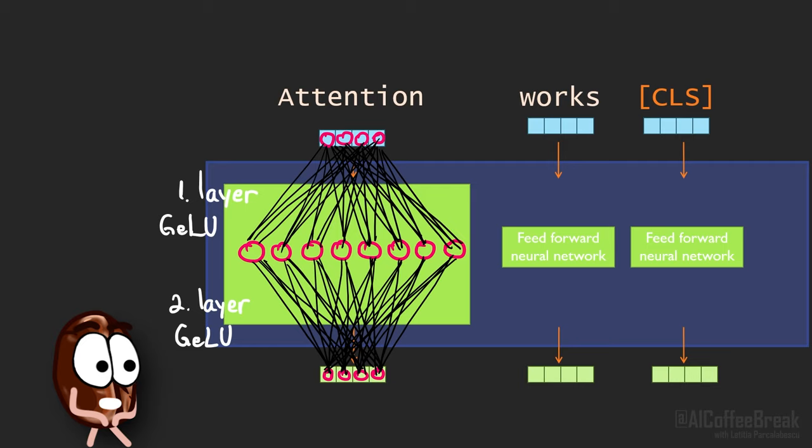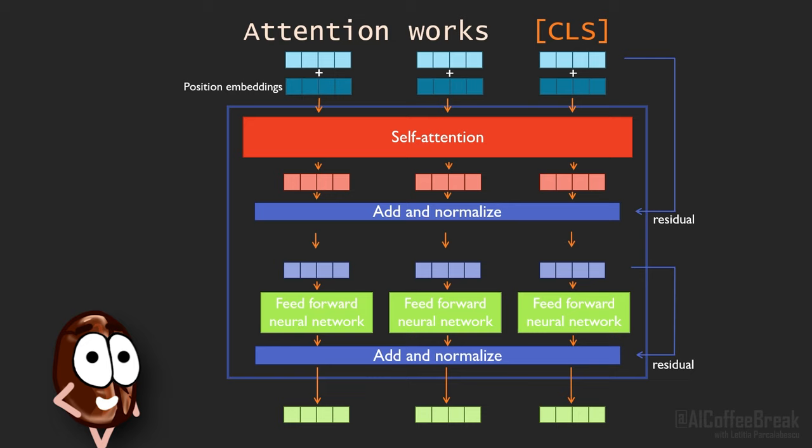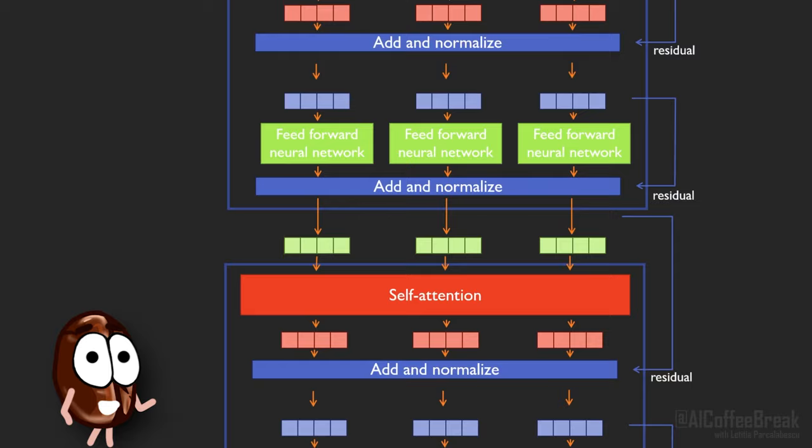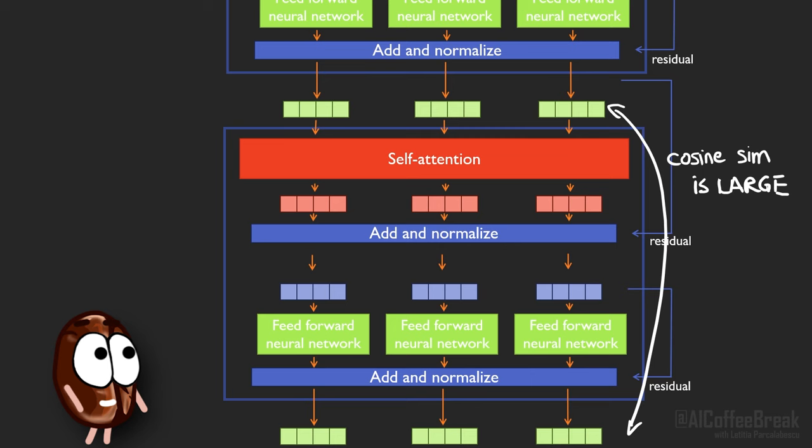Furthermore, the authors empirically observe that cosine similarity is high between representations from one layer to the next, meaning that activations from layer to layer do not change a lot. This is because there is a residual connection around the attention block and one around the MLP block. Each layer learns to add only a small norm. In comparison, the norm of the residual connection is large.